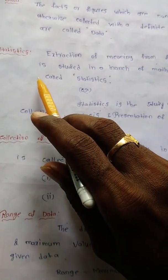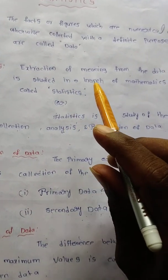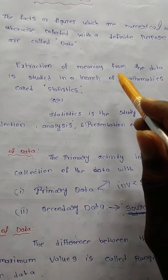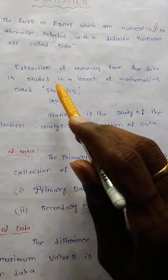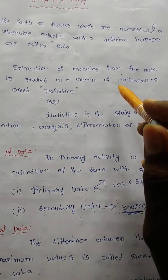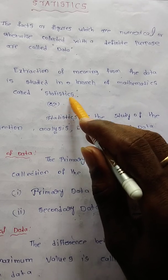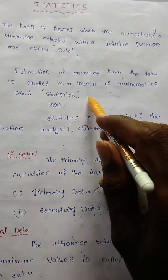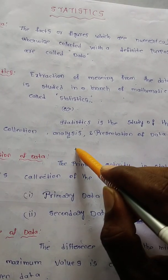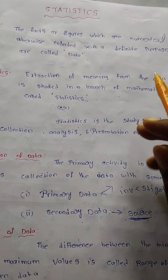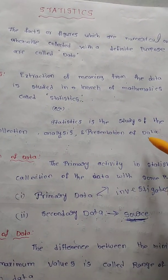Next, statistics. What do you mean by statistics? Statistics is the extraction of meaning from data, studied as a branch of mathematics. Statistics is the branch of mathematics that plays a major role in daily life. Statistics is the study of the collection, analysis, and presentation of data — we collect the data, then analyze it, then present it.